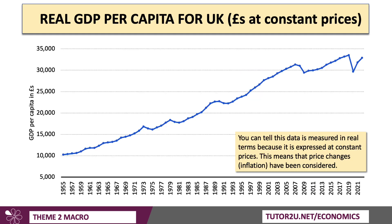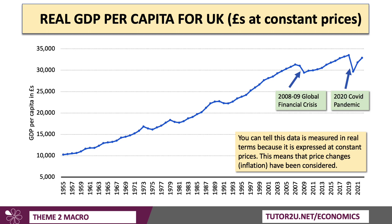Here's the figure for GDP per capita in the UK, measured at constant prices, so the data is in real terms. Price changes have been considered and the data is expressed at constant rather than current prices. You can see ups and downs — for example, the global financial crisis leading to a recession in 2009. There was also a significant fall during the COVID pandemic, when the level of GDP in the UK dropped by more than 10% in just one year, before the recovery started.